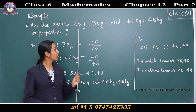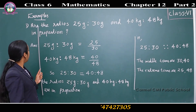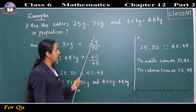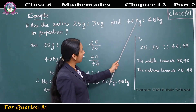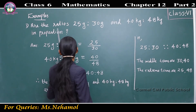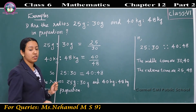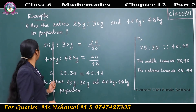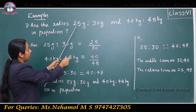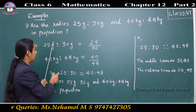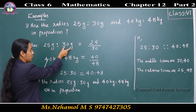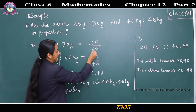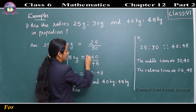Now we can go through some questions. First: are the ratios 25 grams is to 30 grams and 40 kilograms is to 48 kilograms in proportion? That means we have to check whether the ratios are equal or not. The first ratio is 25 grams is to 30 grams, which equals 25 by 30.